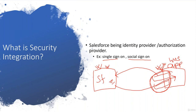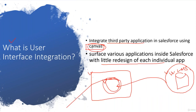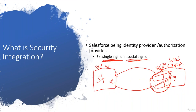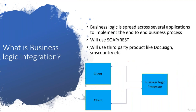So where security is integrated — the user's authentication mechanism is shared between two systems. Whenever that kind of thing happens, it's nothing but security integration. We'll see how we do single sign-on or social sign-on in this session as well. So for your understanding, we'll discuss user interface integration and security integration.